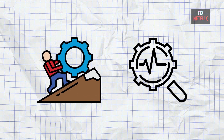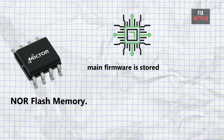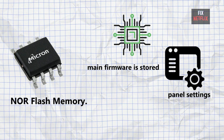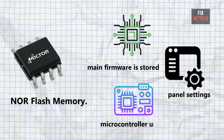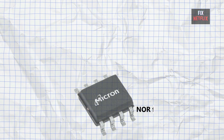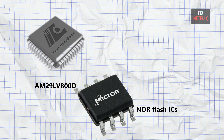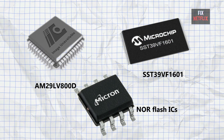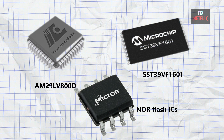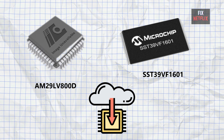Now let's look at the NOR flash memory. This is where the main firmware is stored. It also contains panel settings and data for the TV's microcontroller unit, or MCU. Some common examples of NOR flash ICs are the 25XXX series, AM29LV800D, and SST39VF1601. If you ever need to update the firmware, this is the chip that gets flashed.